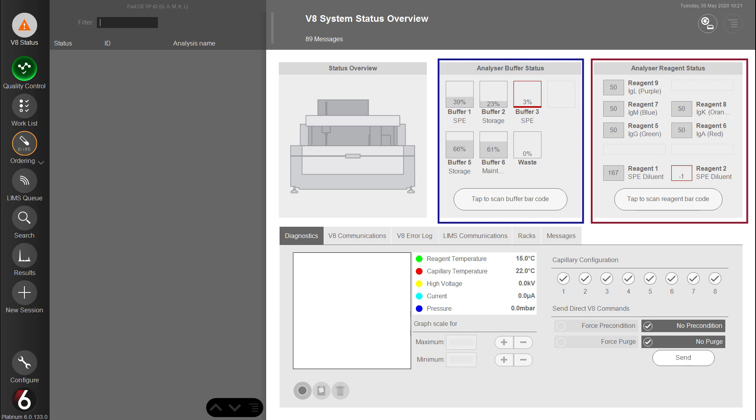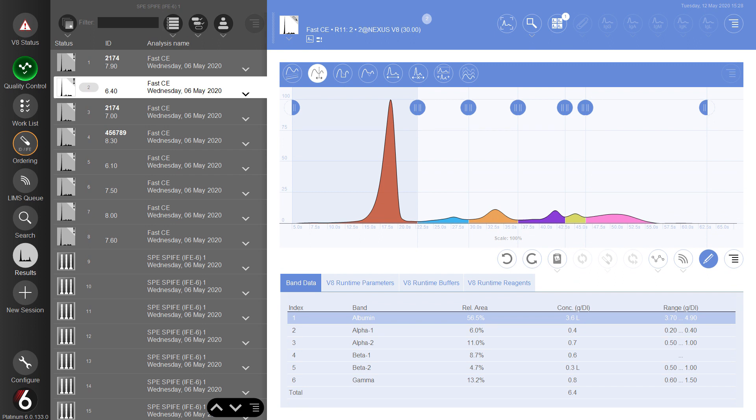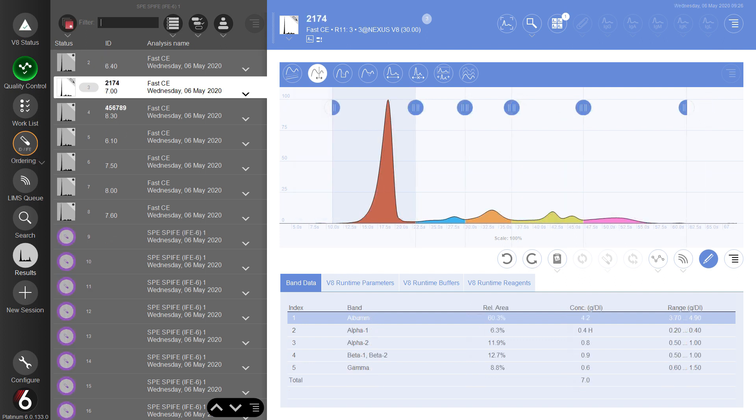Serum proteins display a six-banded fraction. You have the option of reporting each fraction individually or combining beta-1 and beta-2 into a single beta fraction.